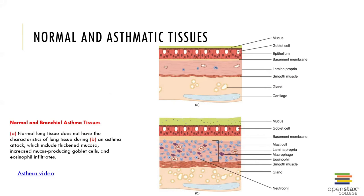During an asthma attack, normal lung tissue changes significantly. The mucosa becomes thickened, there is an increase in mucus-producing goblet cells, and the goblet cells themselves become thickened. There is also an infiltration of eosinophils. A video shows this in more detail.